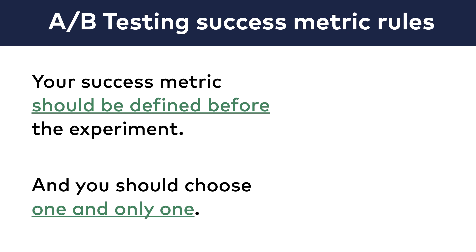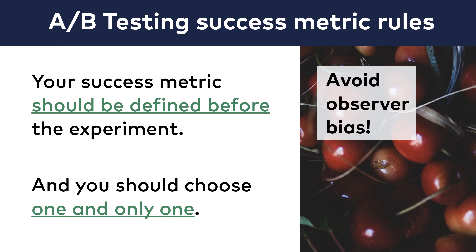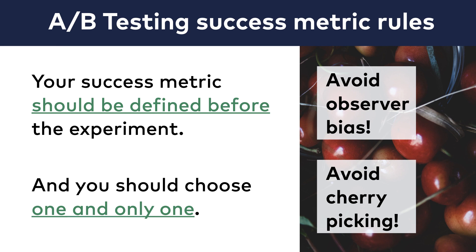Why are these rules so crucial? There are multiple reasons, but here's the most important one: to avoid bias. There is a bias called observer bias, and a specific type of that is called cherry-picking.